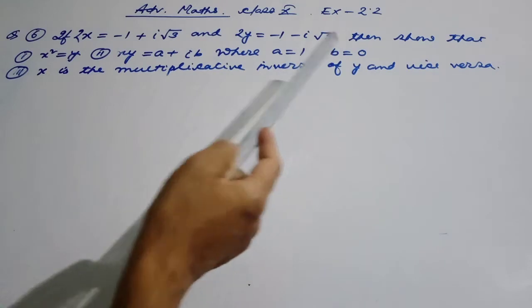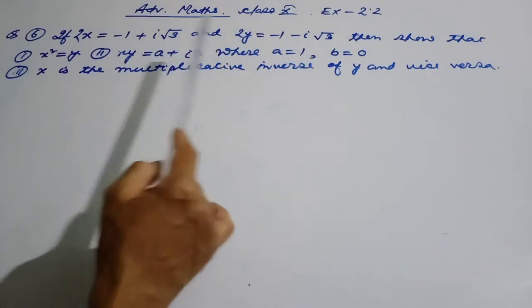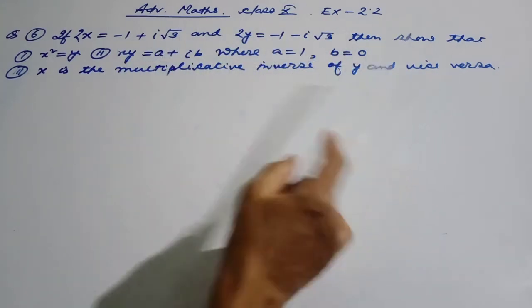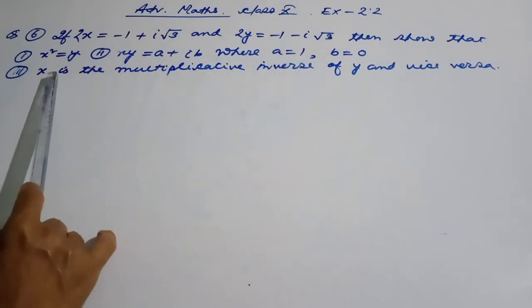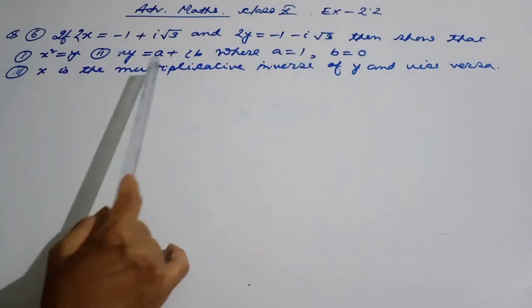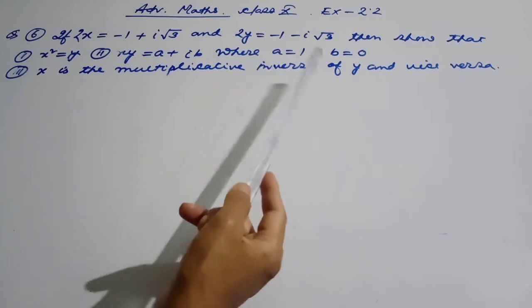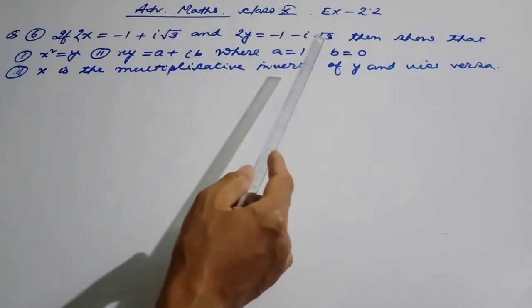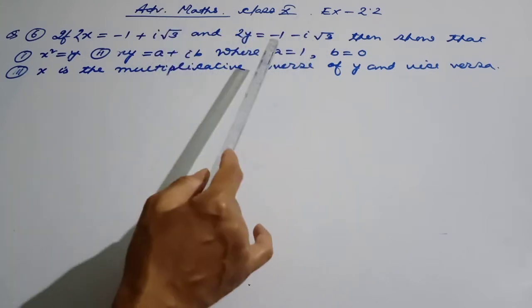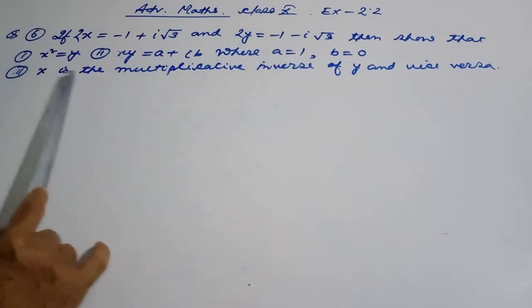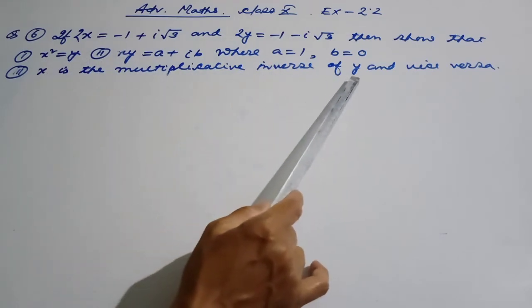Question number 6 is x is the multiplicative inverse of y and vice versa. So we will see y is equal to x and x is equal to y. That is the multiplicative inverse of y.